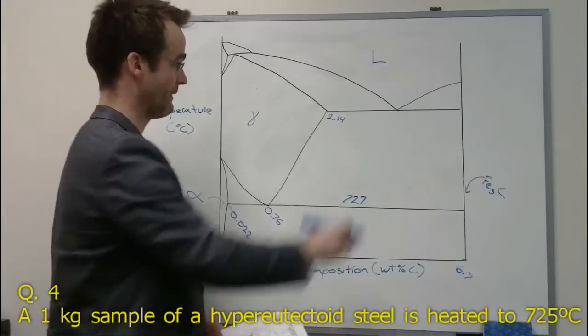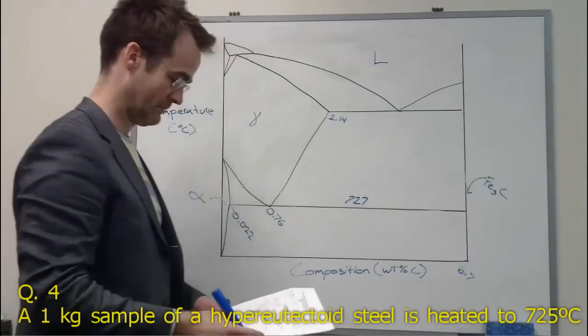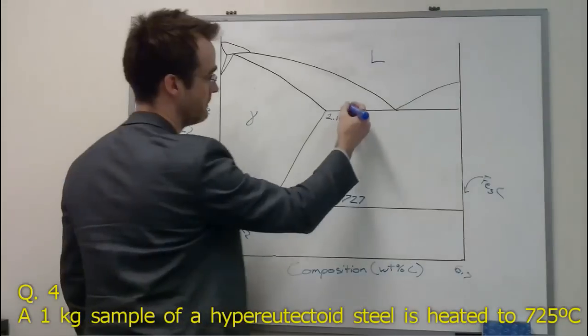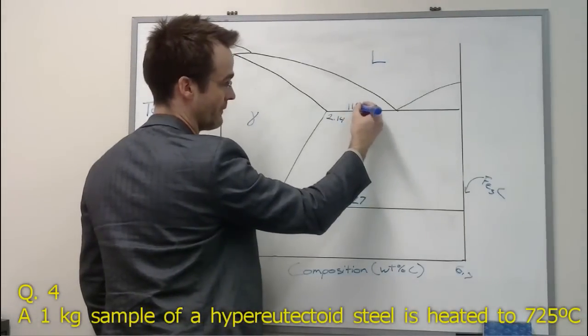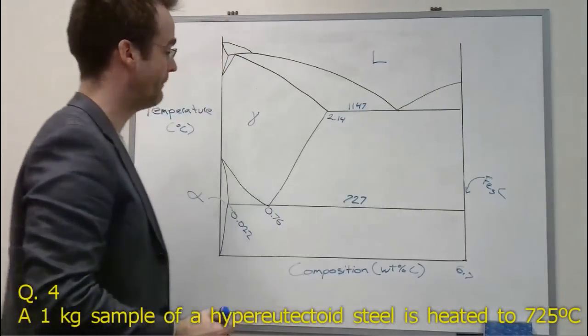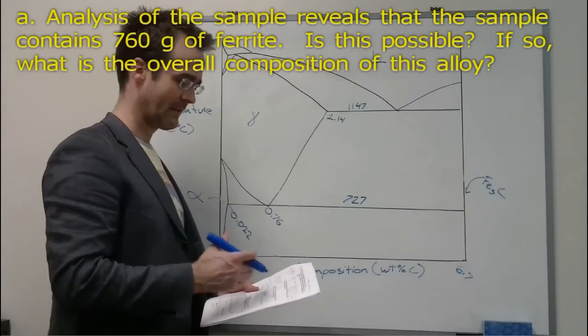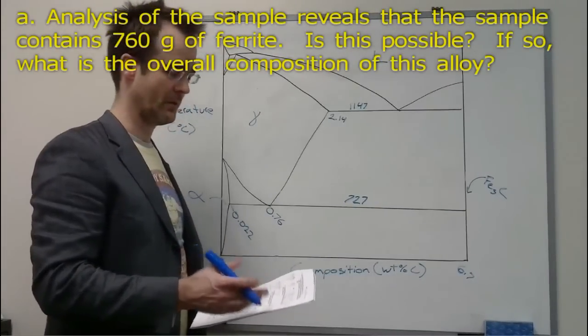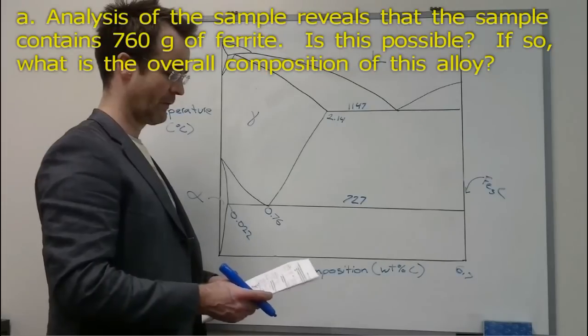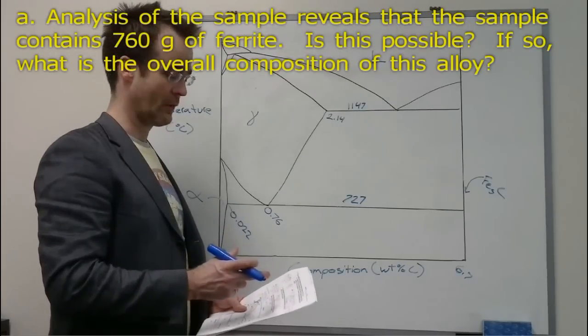And that occurs at the eutectoid temperature, which is 727 degrees C. Okay, so when we look at question A, it's asking us if a certain composition is possible. First thing to realize is there's a few hints in that question.